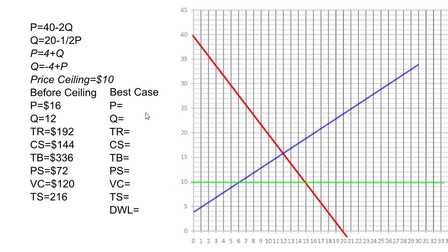I'll assume we've already looked at the equilibrium price of $16 and quantity of 12, and calculated all these things: total revenue of $192, consumer surplus of $144, and total benefit of $336, which is the total area under the demand curve here.